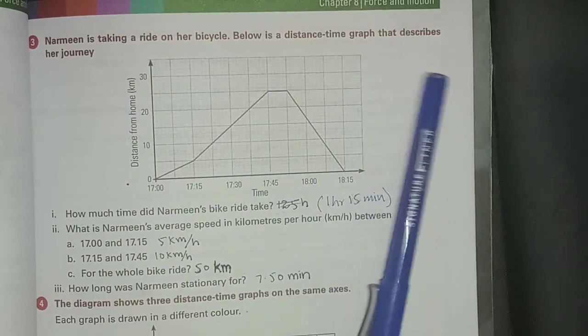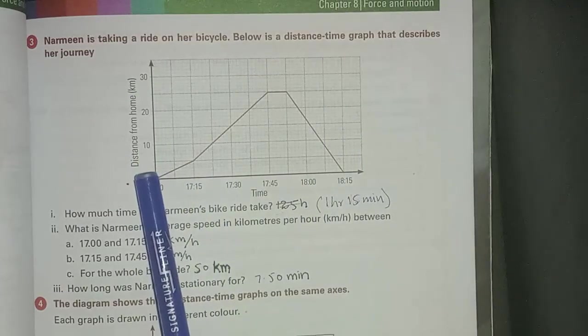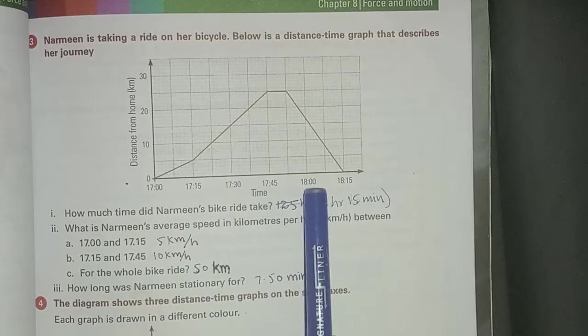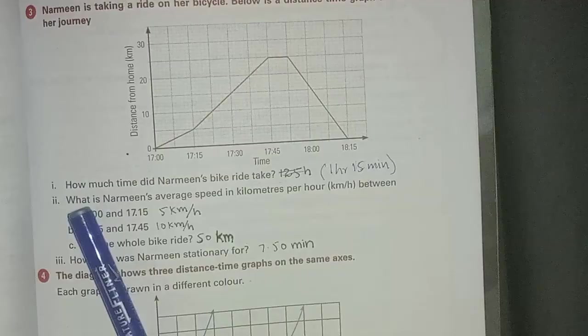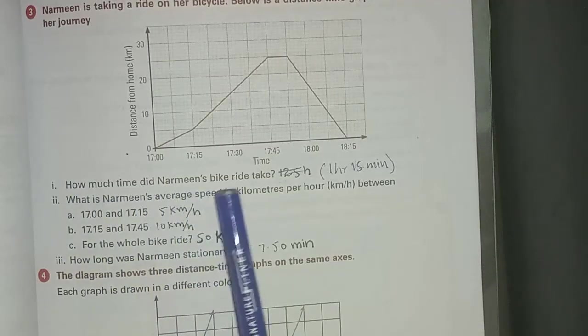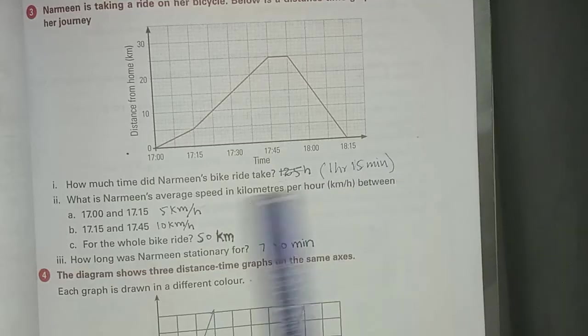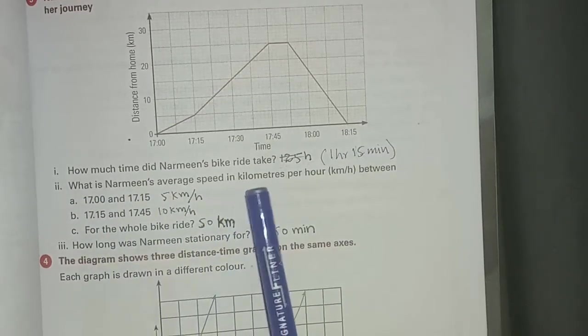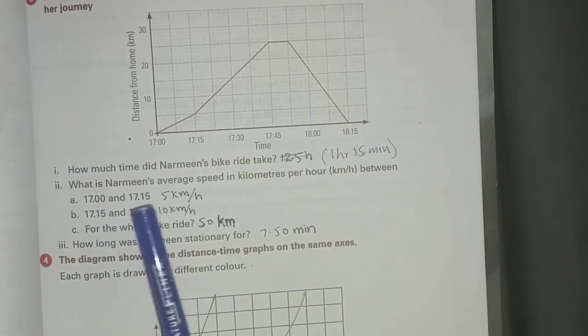Next page, question number 3. Nermeen is taking a ride on her bicycle. Below is a distance-time graph that describes her journey. Here a graph is given, this side shows distance from home in km. First question: how much time did Nermeen's bike ride take? Answer: 1 hour 15 minutes. Second question: what is Nermeen's average speed in km per hour between 17:00 and 17:15?